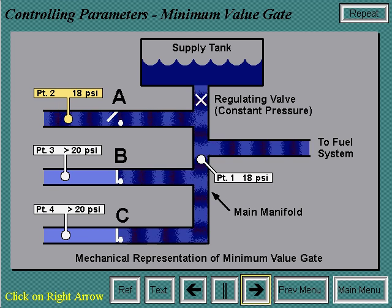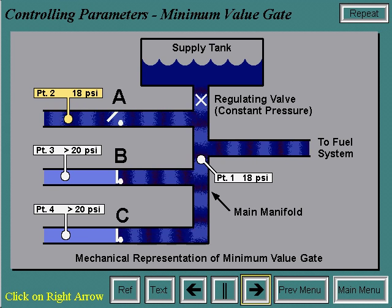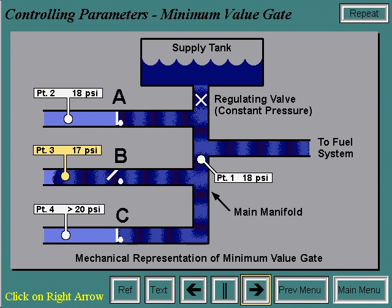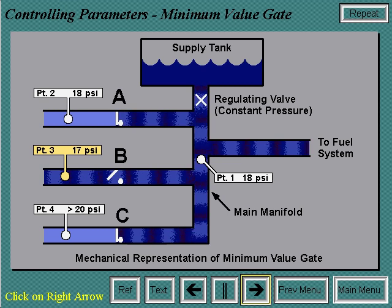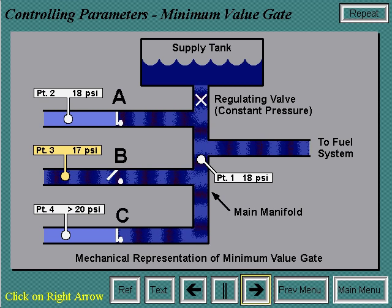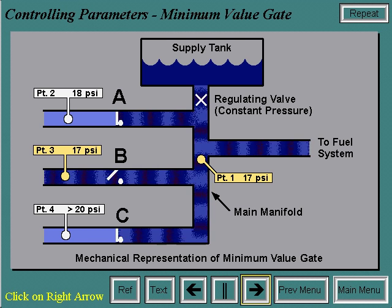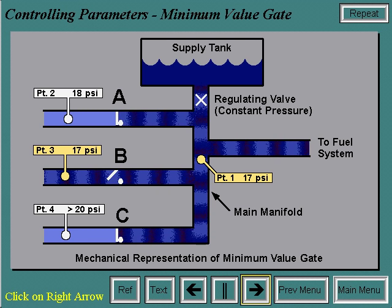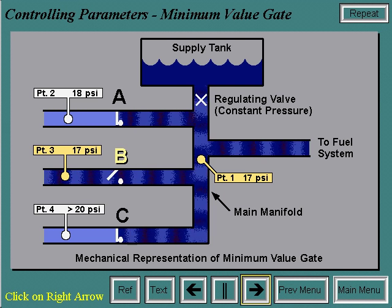As the operating conditions change, the pressure requirements at points 3 and 4 change. As the pressure at point 3 drops below 18 PSI, for example to 17 PSI, the manifold pressure will be brought down to 17 PSI, causing check valves A and C to close and check valve B to open. Therefore, system B is now controlling.